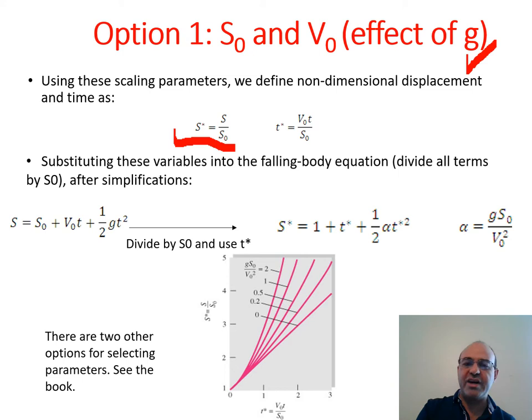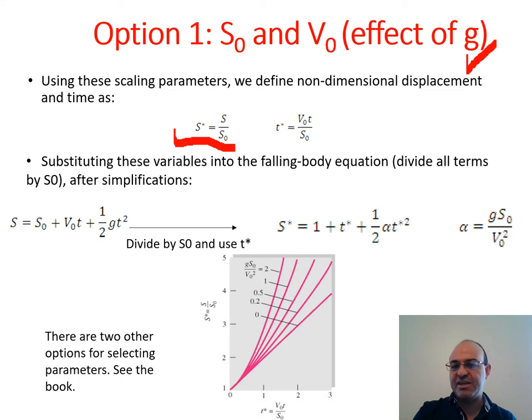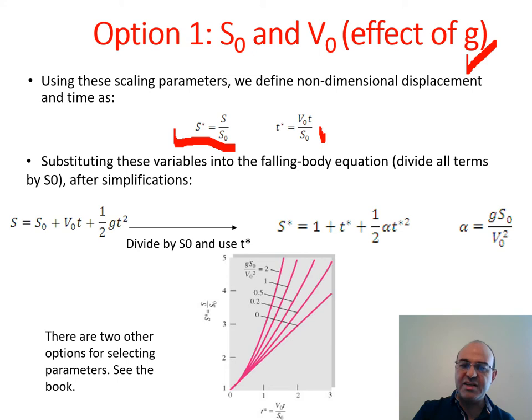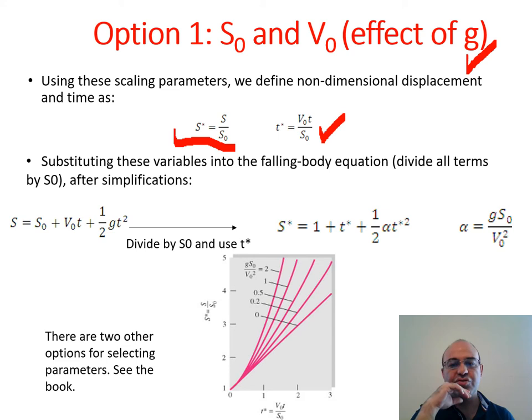Also, if we use S₀ and V₀ combined with time — since V has units of meters per second and T is in seconds, we get length over length — so this term is called T*, a non-dimensional time. We now have dimensionless displacement S* and dimensionless time T*. In this particular case, because the problem is fairly simple, we managed to just look at the equation and come up with these two non-dimensional groups.